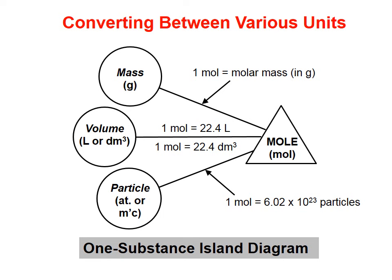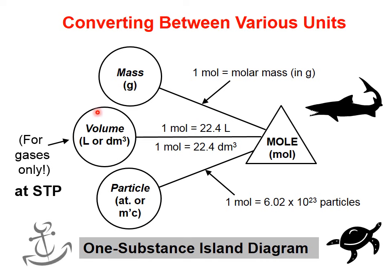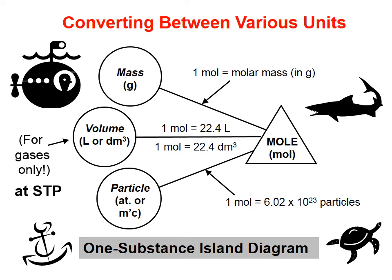To convert between mass, which is the top island, and moles, we have the relationship that 1 mol of any substance is equal to the molar mass in grams. If we want to convert between volume of gases at STP, which is this middle island, and moles, we have the relationship that 1 mol of any gas at STP takes up 22.4 liters of space.